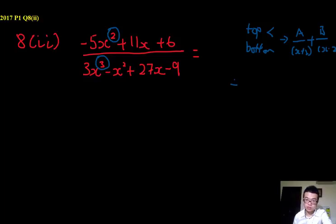However, if the top itself is the same, or using a shortcode here, top equals bottom, or if it's more than the bottom, then keep in mind that you must actually use a long division first, so that you get a whole number here, for example you get 2, then you get plus the rest of it.